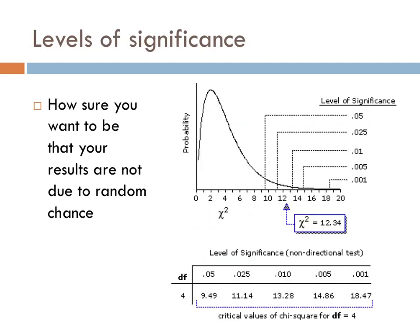The level of significance in chi-squared analysis is, in essence, how confident that you want to be that your results are not due to random chance. Different levels of significance are shown in this probability graphic to the right: 0.05, 0.025, 0.01, 0.005, 0.001. What these numbers provide is, in essence, what percent chance there is that your results could come from random chance.